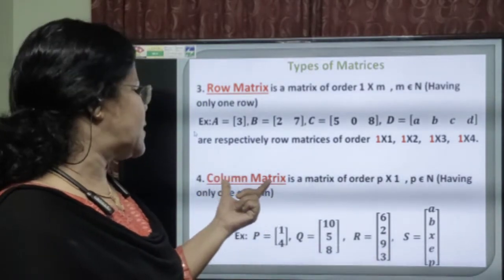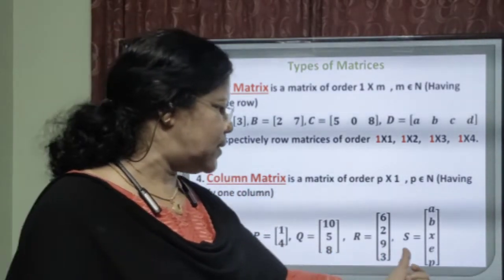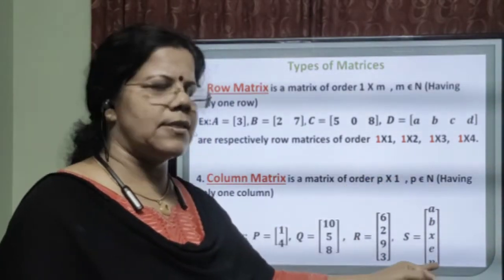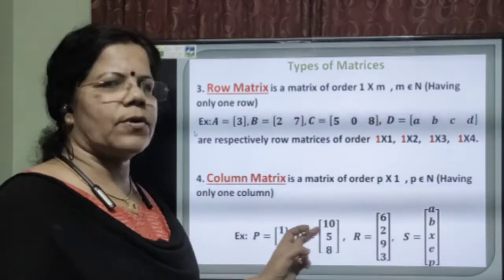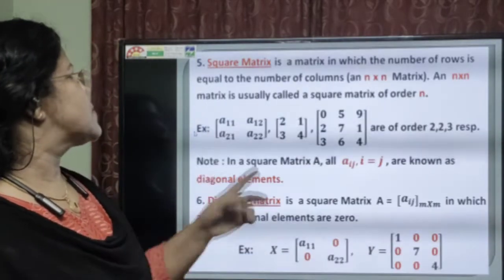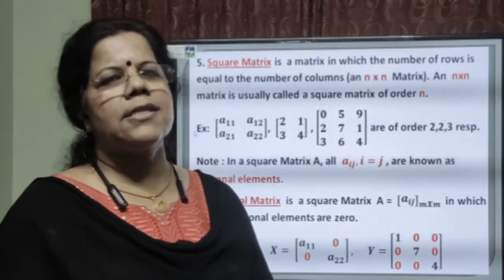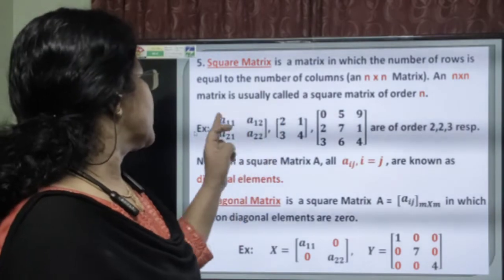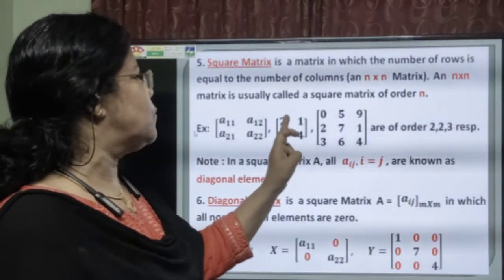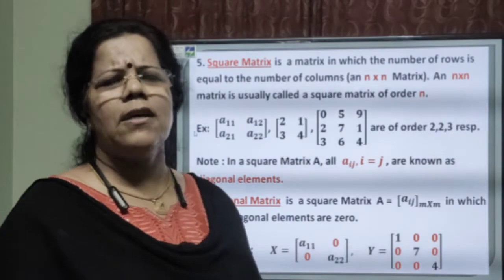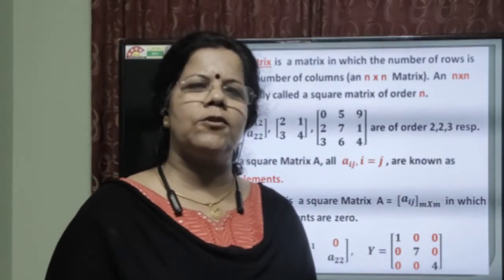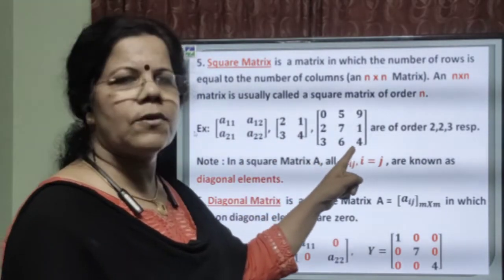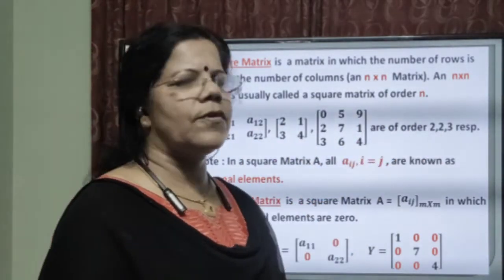Similarly, next comes the column matrix. In a column matrix, there is only one column in each matrix but different numbers of rows. Next comes the square matrix. In a square matrix, the number of rows is equal to the number of columns. Here, it is a 2 by 2 and a 3 by 3 matrix. But we don't say 2 by 2 or M by M — simply, we say a square matrix of order 2, order 3, or order N.